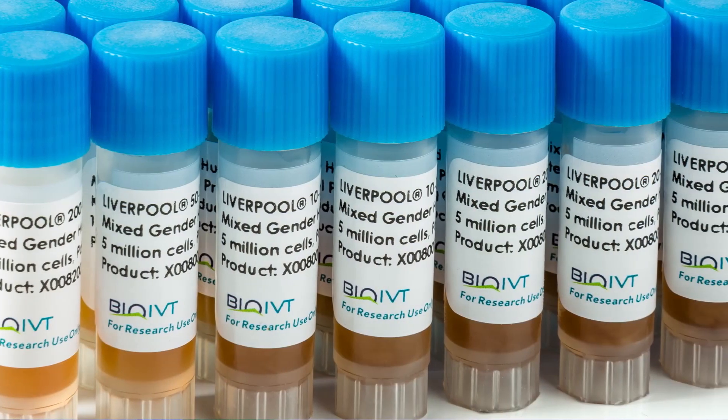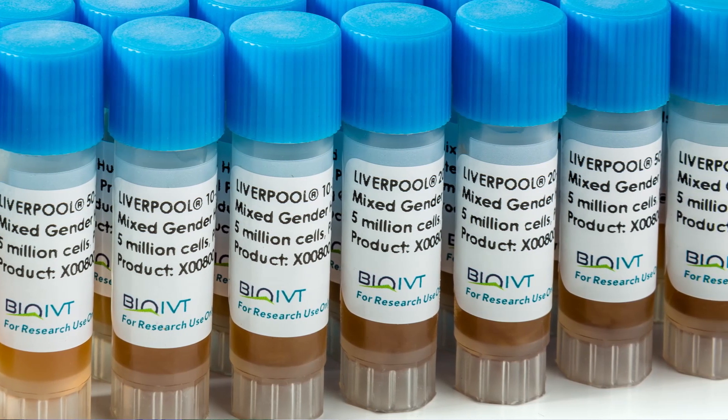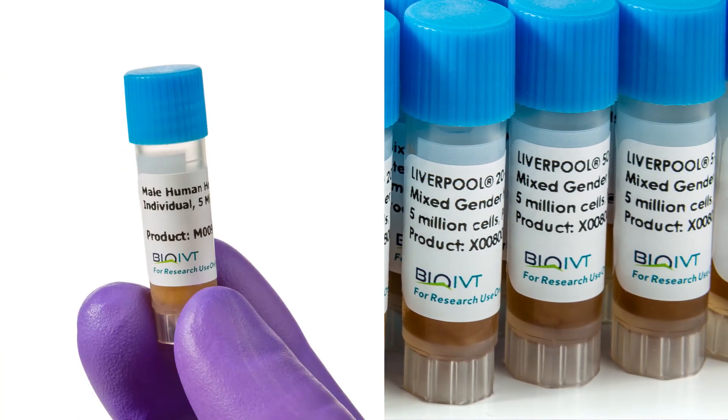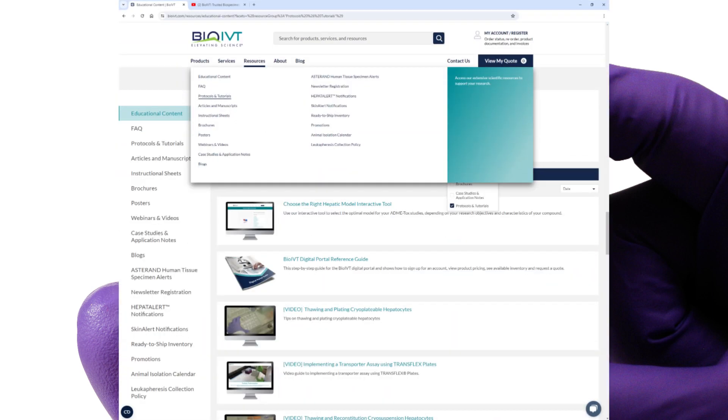These assays commonly use pooled hepatocyte lots and BioIVT offers pooled hepatocytes in two distinct cryopreservation formats, liverpool and cryostacks. These pools contain a wide range of donors that can contain as little as two individual donors all the way up to 200 donors. Because each format uses specialized thaw protocols and reagents, we will not review hepatocyte thawing, but additional videos demonstrating hepatocyte thawing can be found at BioIVT.com.